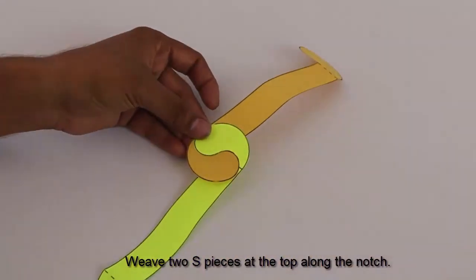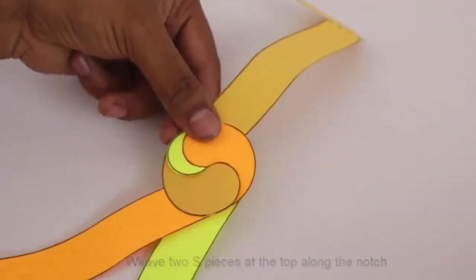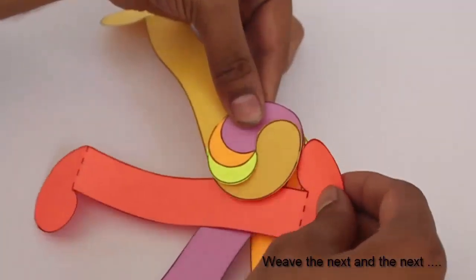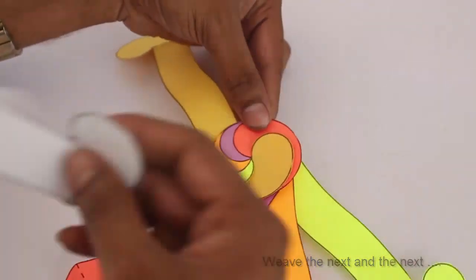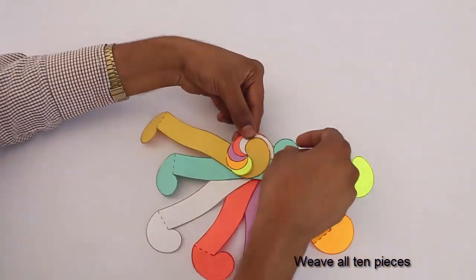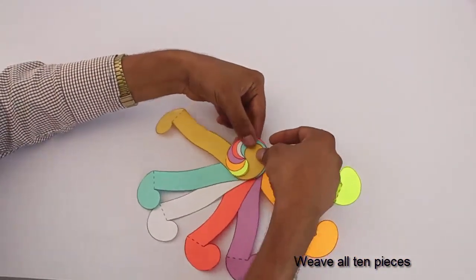Now we will start assembling the pieces. First, interlock two pieces at the top along the notch. Keep adding more pieces in place. Then put the next and then the next.